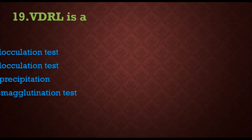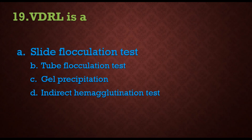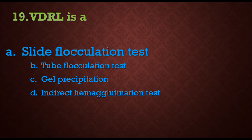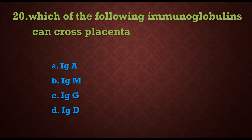Question 19: VDRL — the full form is Venereal Disease Research Laboratory — is a test used to identify syphilis, caused by Treponema pallidum. They are asking: VDRL is a — a) slide flocculation test, b) tube flocculation test, c) gel precipitation, d) indirect hemagglutination. The answer is a) slide flocculation test, which is a type of precipitation reaction.